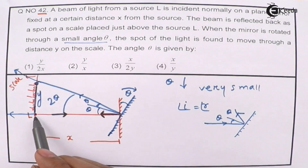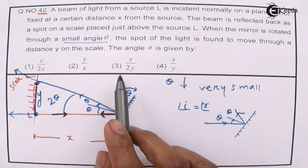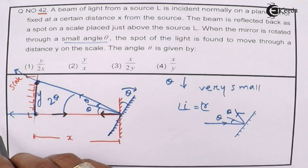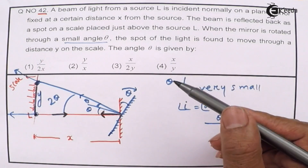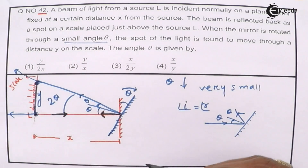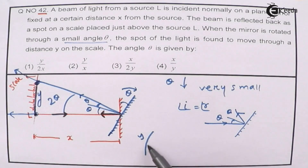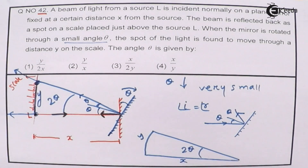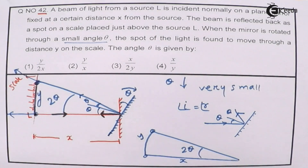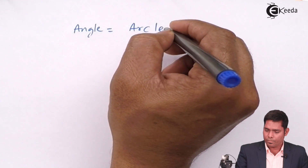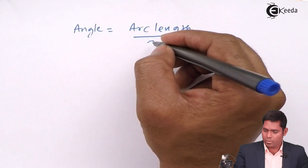When I measure that distance: earlier the spot was forming at the source itself (normal incidence), but now in the rotated case it is displaced. The total deflection angle is two theta, and this distance is X. Since the angle is very small, I can consider Y as the arc length. So the angle equals arc length upon radius, giving: tan(2θ) = Y/X. Because the angle is very very small, I drop the tan, leaving two theta = Y over X.